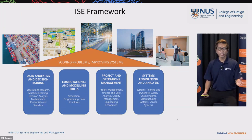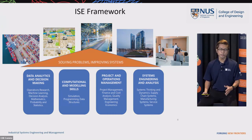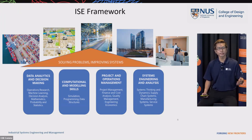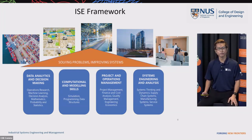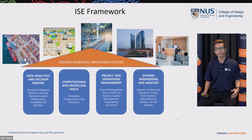Looking across all these different application areas, there are some common attributes. First, they are very dynamic — they keep changing over time. Second, there is a lot of randomness, so nobody can pin down very clearly what is going to happen in the future. Third, although they are very random, there is a lot of data available that provides important information for decision making.